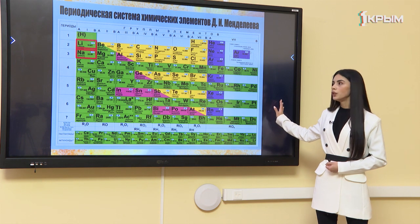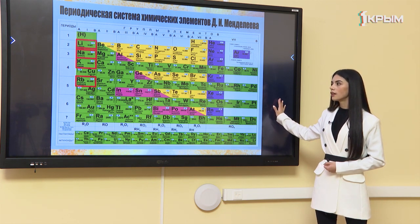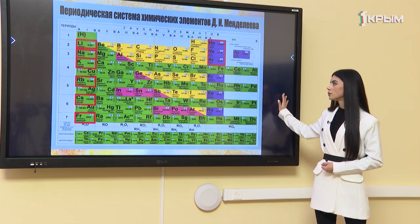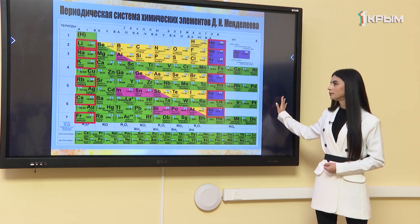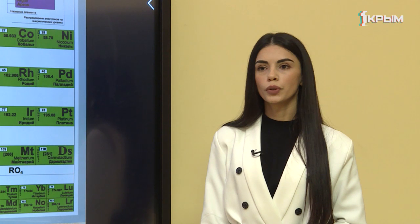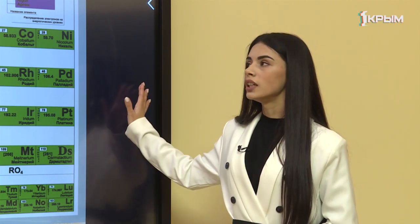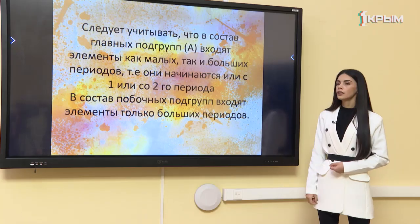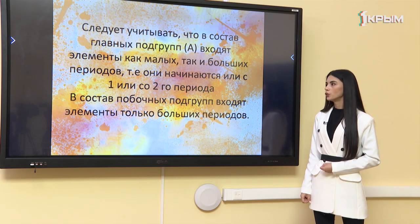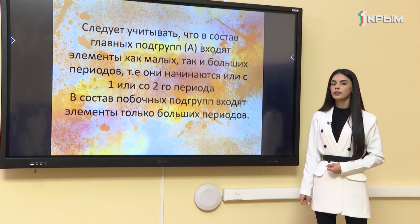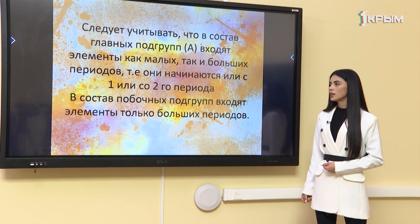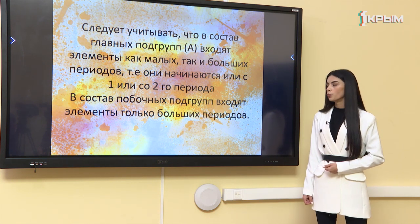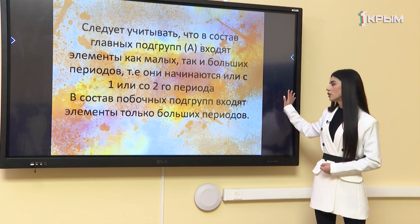Периоды начинаются со щелочных металлов и заканчиваются благородными газами. Группа содержит главную и побочную подгруппы. Следует учитывать, что в состав главных подгрупп входят элементы как малых, так и больших периодов — то есть они начинаются с первого или со второго периода. В состав побочных подгрупп входят элементы только больших периодов.